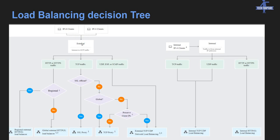For external traffic, there are three options: HTTPS, TCP, and UDP. If you want a regional one, use the regional external HTTPS load balancer. If you don't need regional, go with the global HTTPS load balancer. If you want SSL offload, use SSL proxy; if not, use the global TCP proxy. To preserve client IP, use the external TCP/UDP load balancer. The same decision tree applies for internal load balancers. That covers the core concept of load balancers. Now we'll go to the cloud console to create a load balancer with a managed or unmanaged instance group.